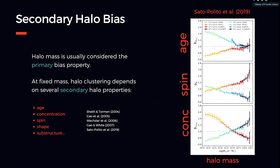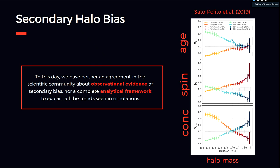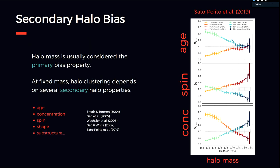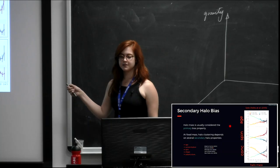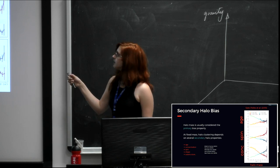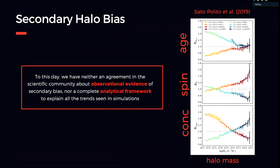However, numerical and N-body simulations have shown that at fixed mass, halo bias also depends on secondary halo properties such as age, concentration, and spin. For example, at fixed halo mass, the oldest halos have higher relative bias than the youngest, and this trend decreases with halo mass. To this day there is no observational consensus on secondary bias, nor a complete analytical framework for all these trends. The most well-studied case is assembly bias — the secondary dependence of halo clustering on assembly history, parameterized by age or concentration. A slice of simulation shows that more and less concentrated halos of fixed mass populate different regions of the cosmic web, reflecting their different bias.